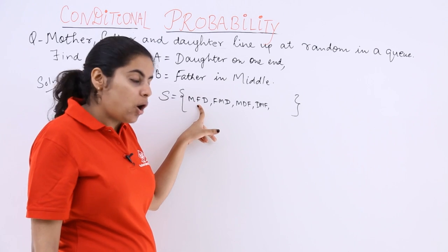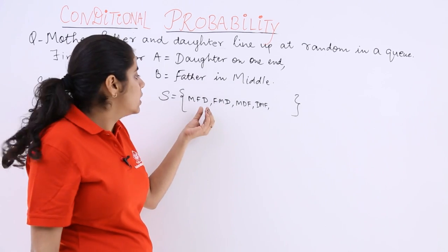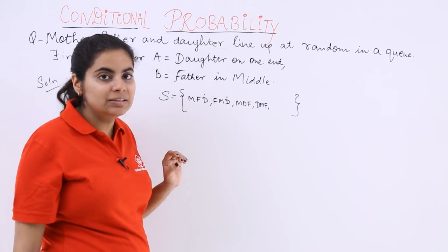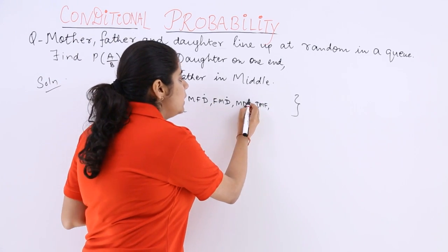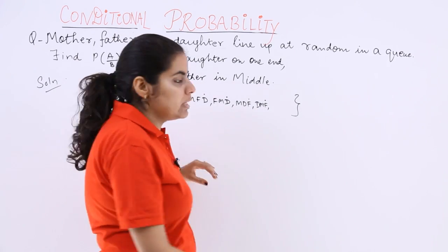This could be possible that mother and daughter could be on one end, father could be in the middle or daughter and father could be on one end, mother could be in the middle and so on. So 2 cases would be when D would be at right end, then 2 cases would be when F would be at right end and the remaining 2 cases when M is at right end.